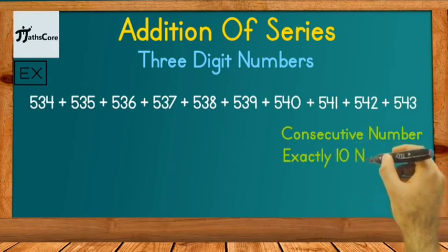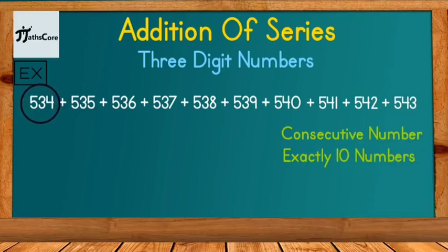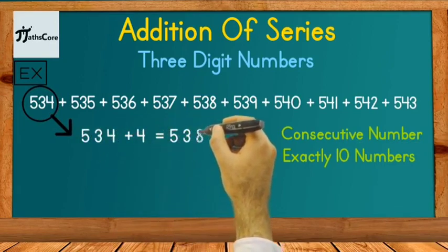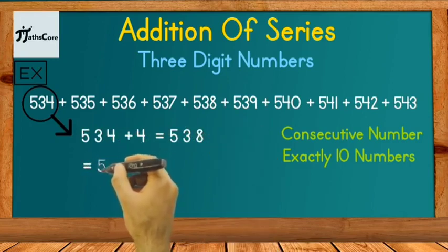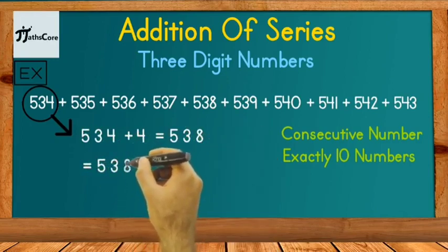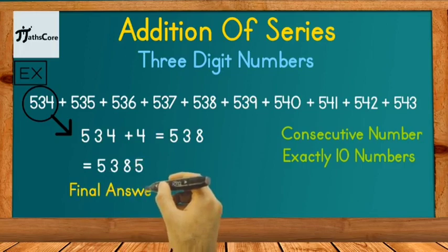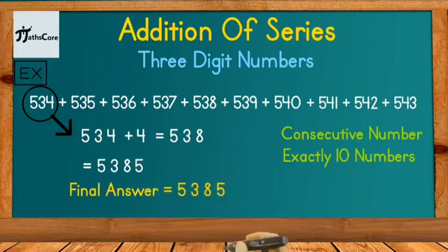So this series also satisfying Vedic math conditions. So we can apply Vedic math technique here. Let's take first number 534 here and add 4 in it. 534 plus 4 is equal to 538. Now take this 538 in the next step and write down 5 after 538. And this is your final answer 5385 which is addition of given series.